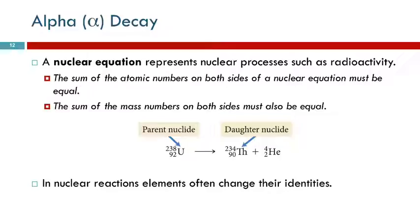In a nuclear equation, we're going to keep track of the protons and the neutrons, because we can't just balance it with element symbols, because we have elements changing their identity. So we use nuclear equations to represent radioactive processes. An important idea here is the sum of the atomic numbers on both sides of the nuclear equation must be equal. The atomic numbers have to be equal on both sides, and the mass numbers have to be equal on both sides.